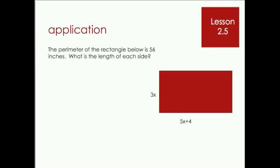Our final example would be this application. We have a rectangle here. Our sides are 3x and 5x plus 4. We know that the perimeter of the rectangle below is 56 inches. So now we're going to find the length of each side. Now we know from previous knowledge that the way we find perimeter is we take the length and multiply it by 2. We take the width and multiply by 2, then add them together to get our perimeter.